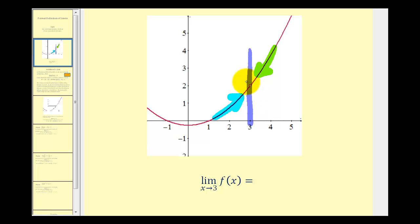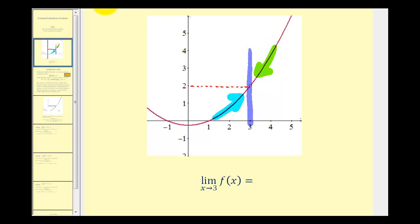From this graph we can see that as we approach positive 3 from the left, we're approaching a function value of positive 2, and the same is true as we approach from the right. Therefore this limit is equal to positive 2, even though the function does not exist at x equals 3, as we can see by this hole.